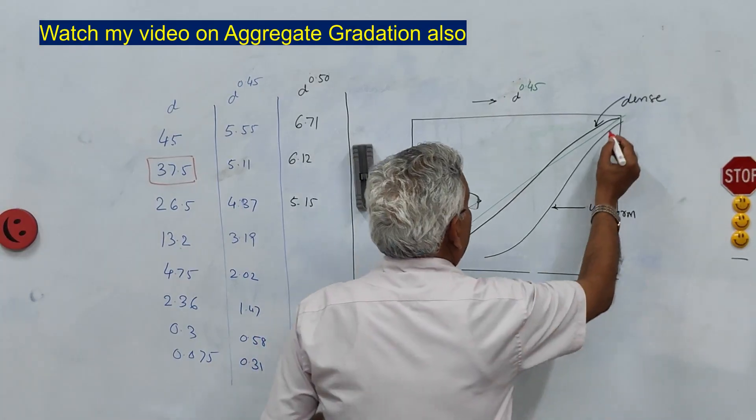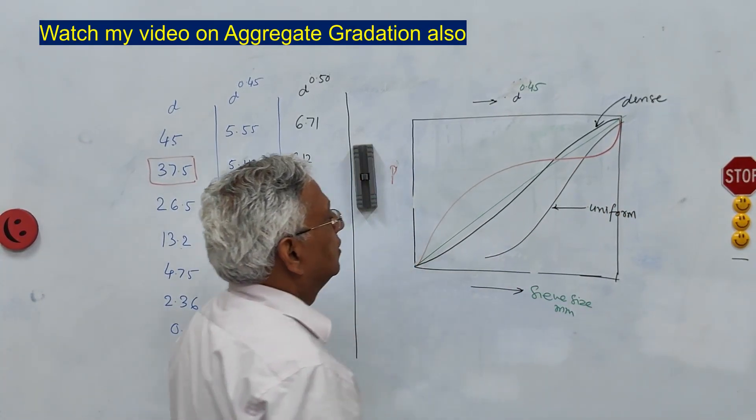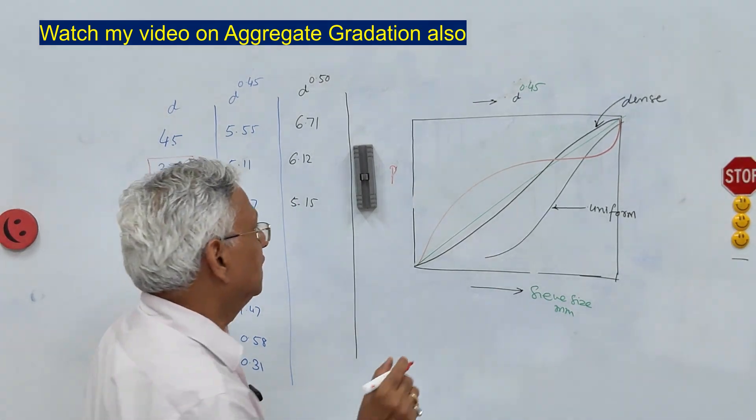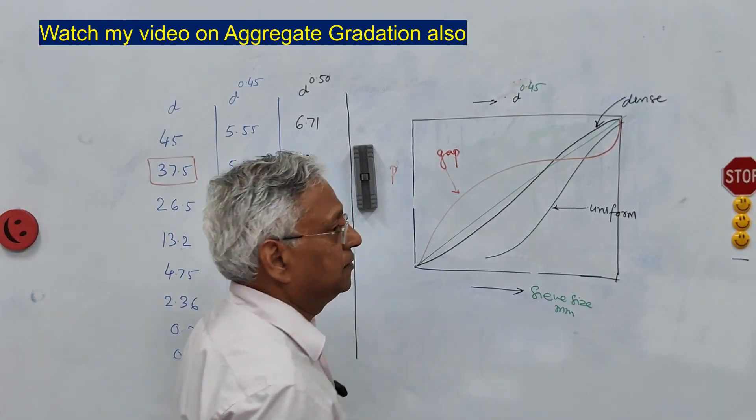Then this type of grading when you compare it with the maximum density line this is a gap graded.